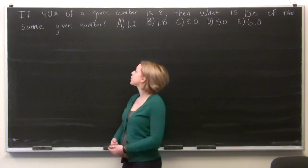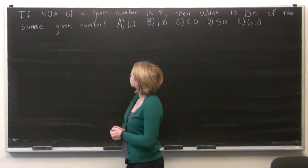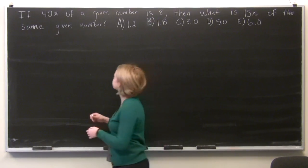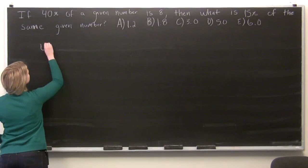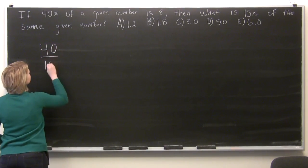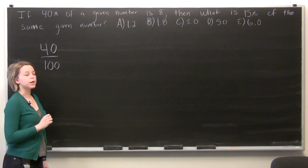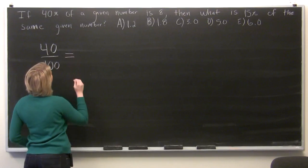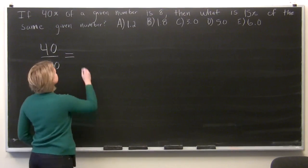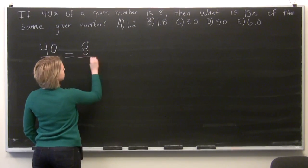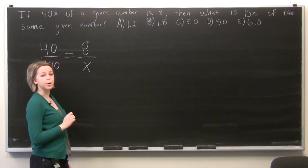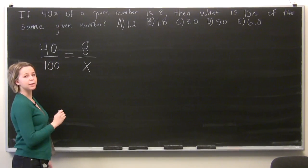So to start off this problem, we are going to set up cross multiplication. So we know that 40% is equal to 40 over 100, and we'll set that equal to 8 over our given number x. And then we'll cross multiply.